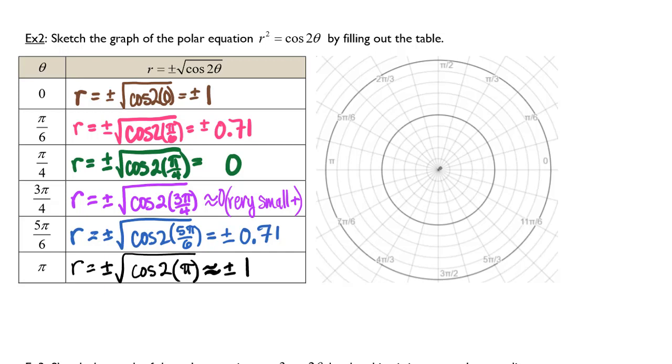When I'm at an angle of 0 radians, I have a 1 and a negative 1 radius. Let's go ahead and call 1, this kind of bolded circle here.